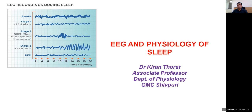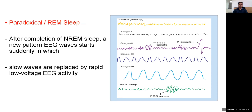Then we saw the various control mechanisms for NREM sleep. Now it is time to study the second variety of sleep, that is REM sleep or paradoxical sleep. After completion of NREM sleep, a new pattern of EEG waves starts suddenly in which slow waves are replaced by rapid low-voltage EEG activity.